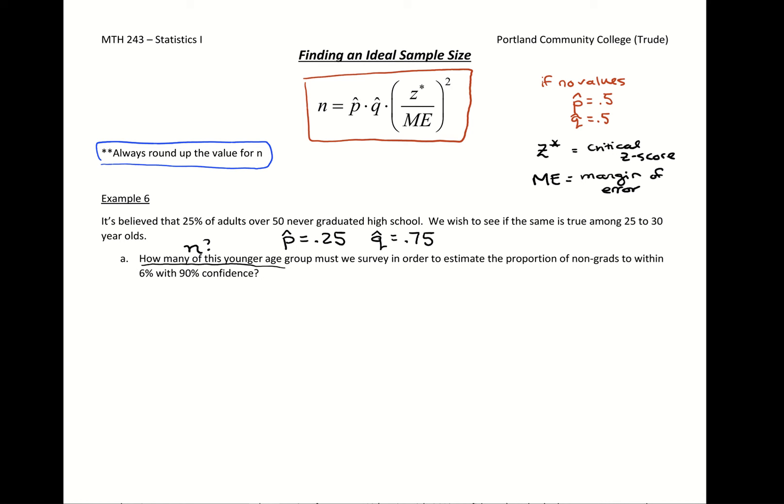So how many people must we survey in order to estimate the proportion of non-grads to within 6%? So that wording there of within 6%, that's describing our margin of error. And if it's given in a percentage, be sure to change it into a decimal. Margin of error should be worked with as a decimal, but it's often described as a percentage when working with proportions.